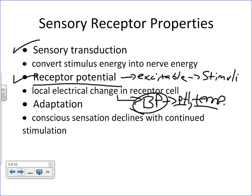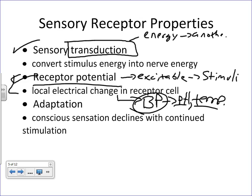We would call a receptor a transducer. Transduction means converting one form of energy into another — in this case, into an electrochemical action potential. So we're taking the stimulus energy and converting it into nerve energy.